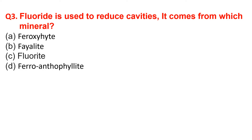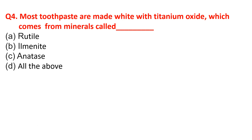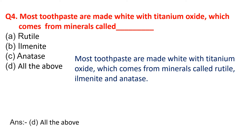Fluoride is used to reduce cavities — it comes from which mineral? The correct option is Option C: Fluoride. Fluoride is a mixture of chemicals sometimes added to drinking water and toothpaste because it is considered good for people's teeth. Most toothpaste is made white with titanium oxide, which comes from minerals called Rutile, Limonite, and Athes — the correct option is all of the above.